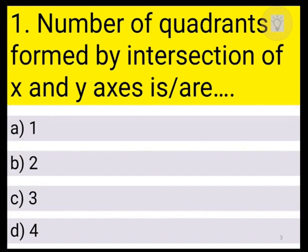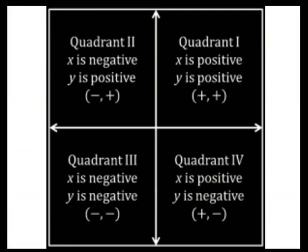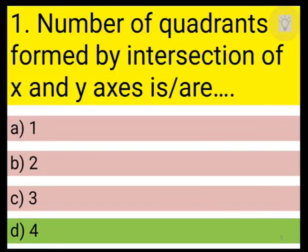Number of quadrants formed by intersection of x and y axes are 1, 2, 3, or 4? Whenever these two axes intersect, four quadrants are formed: quadrant 1, 2, 3, and 4. Therefore, d — 4 is the correct answer.